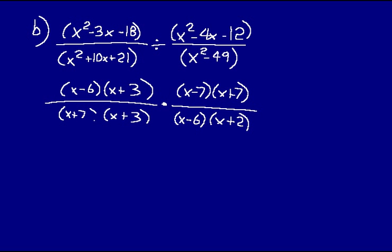Now we can go ahead and cancel. Cancel the X minus 6's. The X plus 3's cancel. The X plus 7's cancel as well. We're left with X minus 7 over X plus 2.